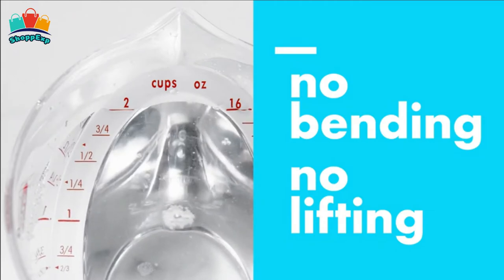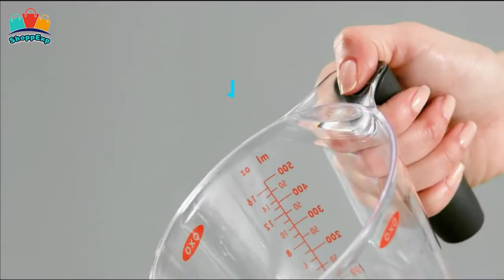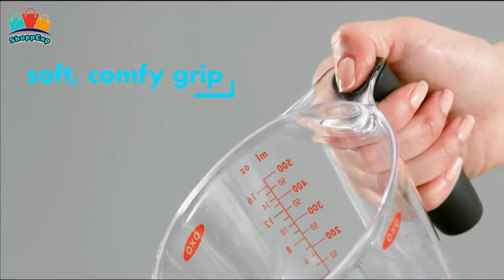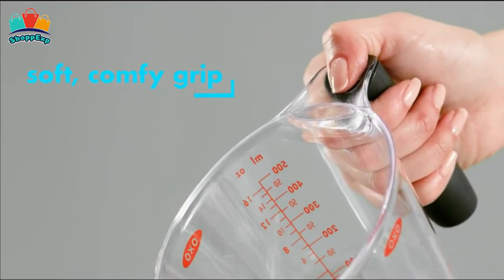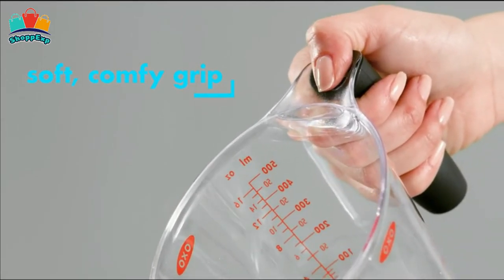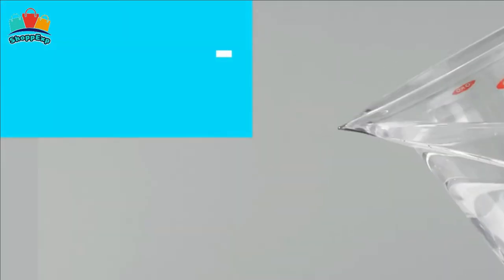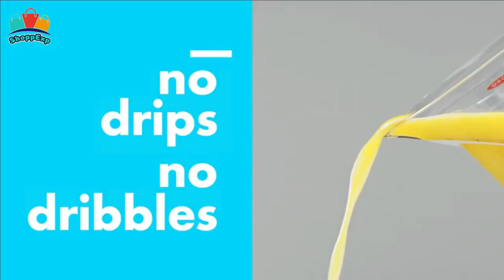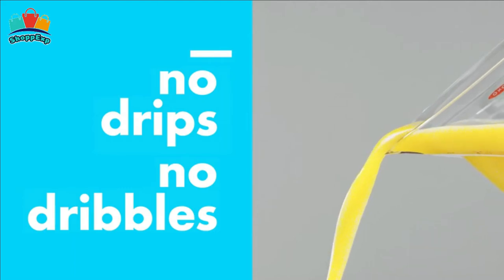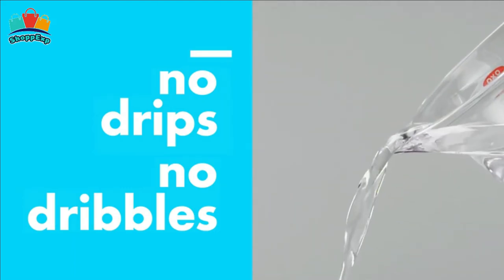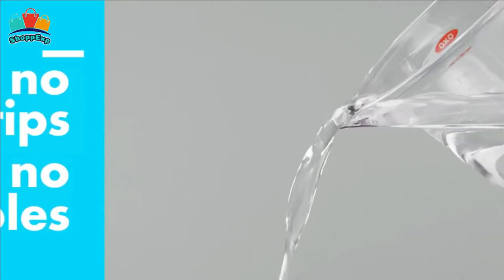The lightweight, BPA-free cup has a non-slip handle and a generous spout that let you pour with comfort and control. A brilliant innovation, this two-cup measuring vessel is not round but oval. That means calibrations are printed on the cup's sides, as is conventional, as well as on a patented guide inside the cup that's angled so it can be read from above.